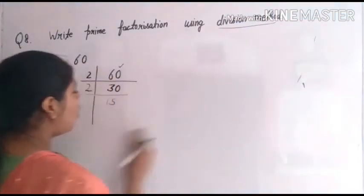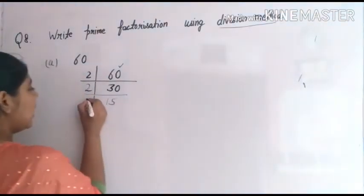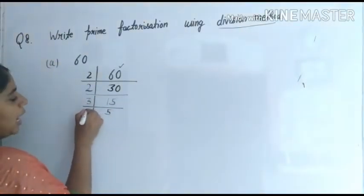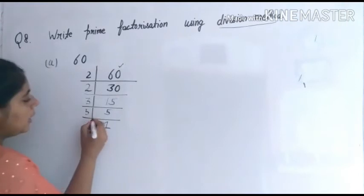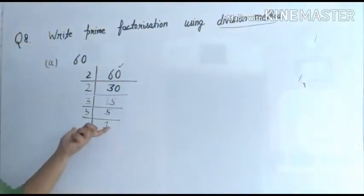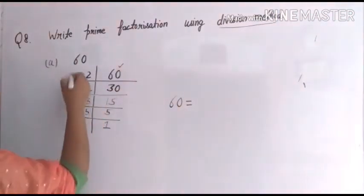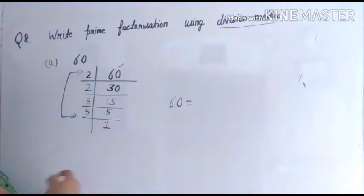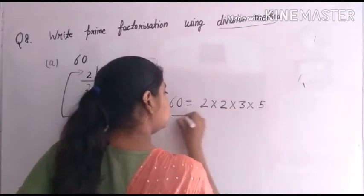Now children, fifteen — which number exactly divides it? Three. Three fives are fifteen. Then five — what divides five? Five. Five ones are five. Once we get one, we stop — when one appears, we stop there. No need to factorize further.